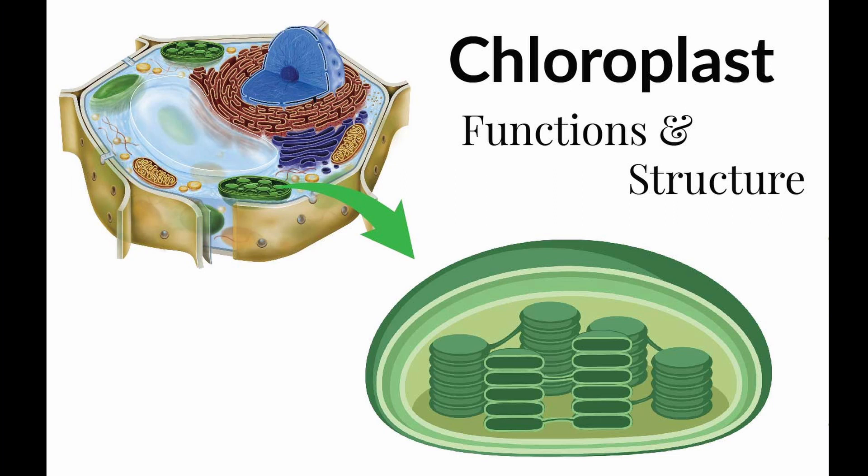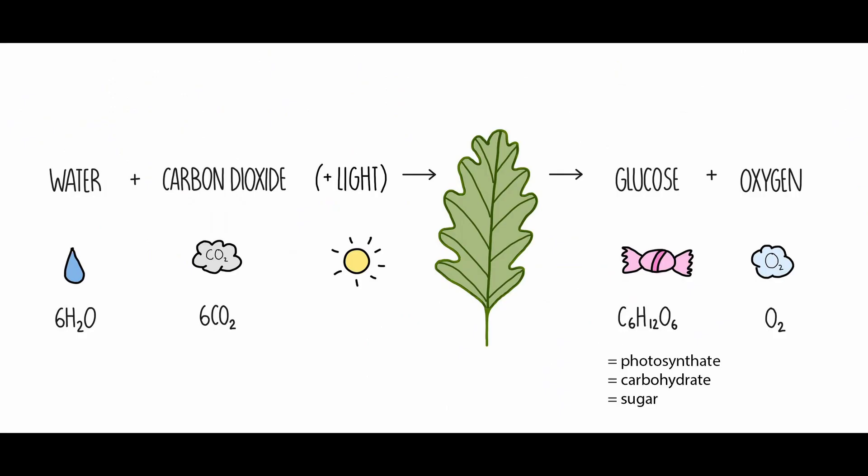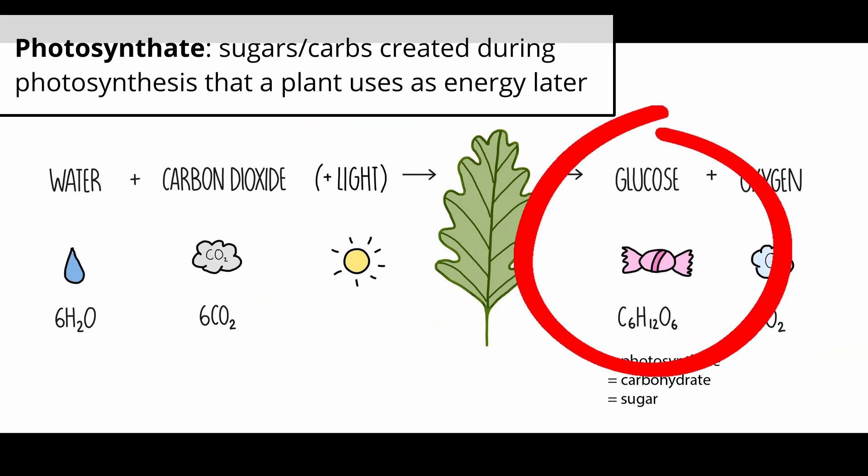On to the actual process of photosynthesis. It starts in the chloroplast when light energy hits a chlorophyll molecule and triggers the reaction. This is often represented with the formula CO2 which is carbon dioxide plus H2O which is water plus light yields oxygen and photosynthate.